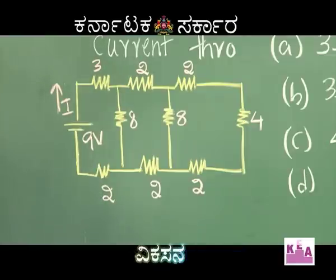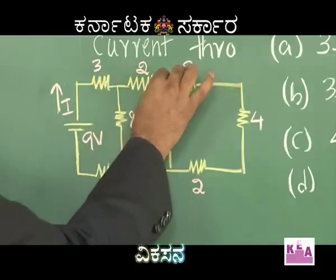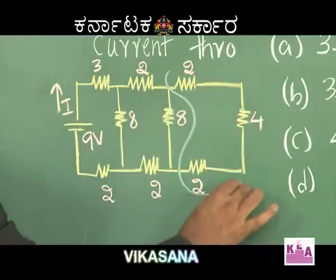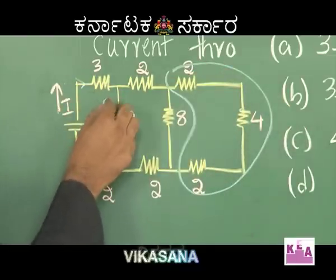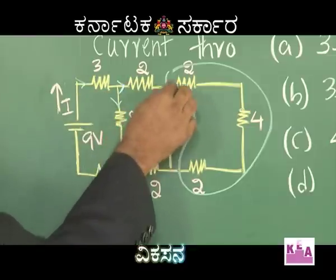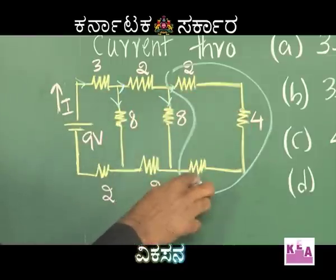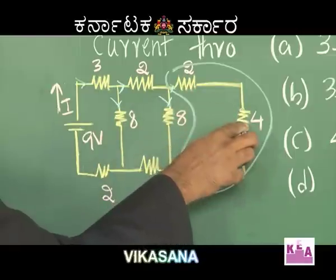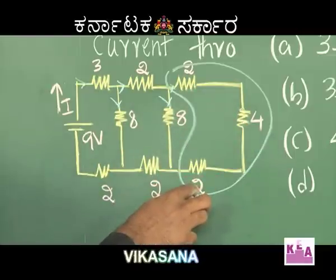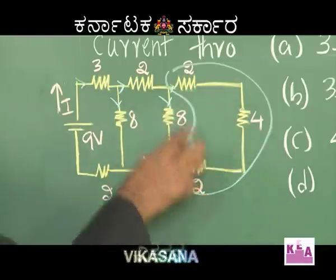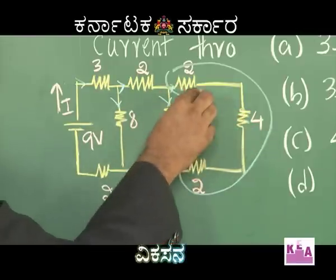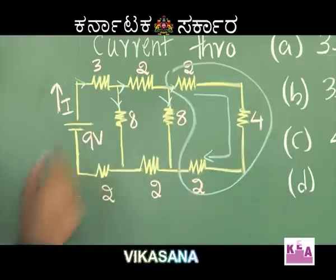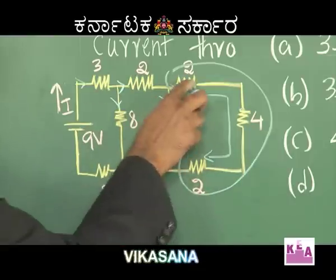Look at this. These three are in series — do you agree with me? Current comes here and splits into two parts. These three are in series: 2 plus 4 plus 2 gives 8 ohm in series. Do you agree with me? This series combination will give us 8 ohm.